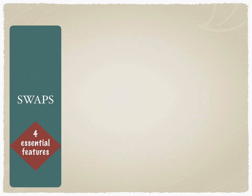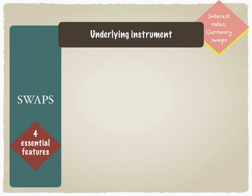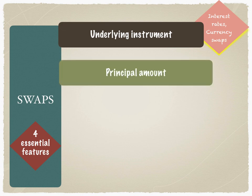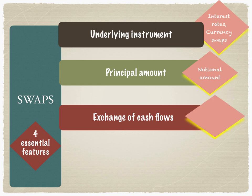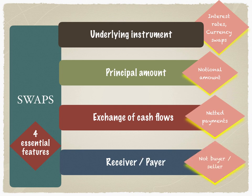In summary, the four essential features of a swap are: first, a swap like all derivative products is based on the price of the underlying asset, which could be interest rates, currencies, or even equities. Second, the swap is based on a principal or notional amount which rarely or never gets exchanged during the swap. Third, there is an exchange only of cash flows at predetermined intervals — these are netted payments. And finally, the relationship between the two counterparties is that of a receiver and a payer, not a buyer or a seller.